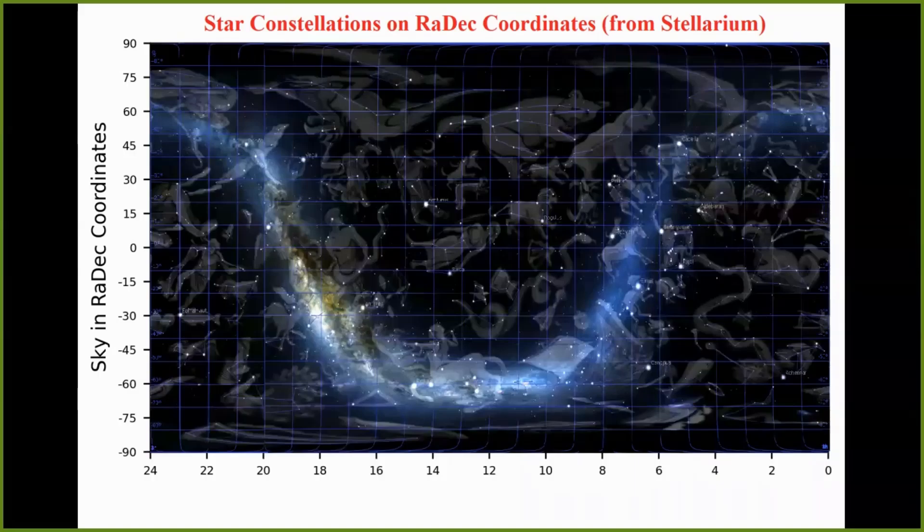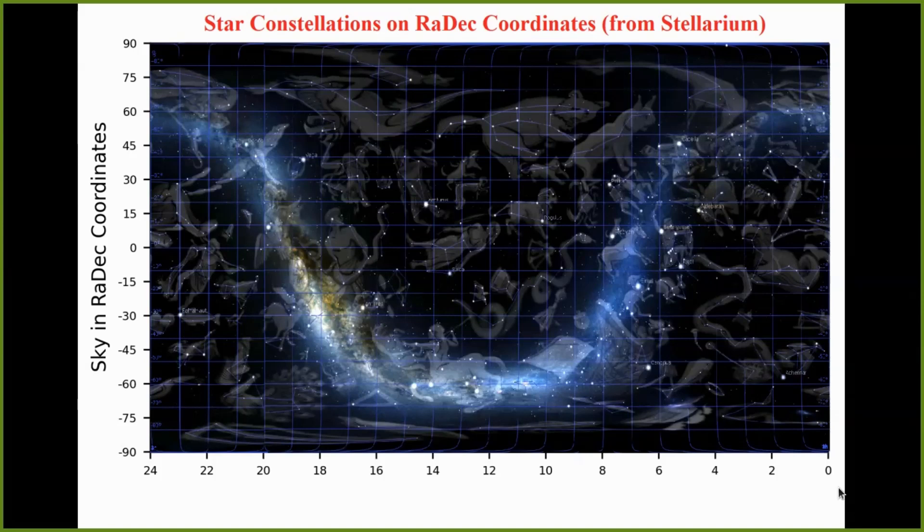First we talk about RADEC sky map. RADEC is short for right ascension and declination, the names of the two coordinates. Right ascension is the horizontal coordinate from 0 to 24 in hours. Declination relates to the Earth's latitude and so has values from minus 90 to positive 90 in degrees.